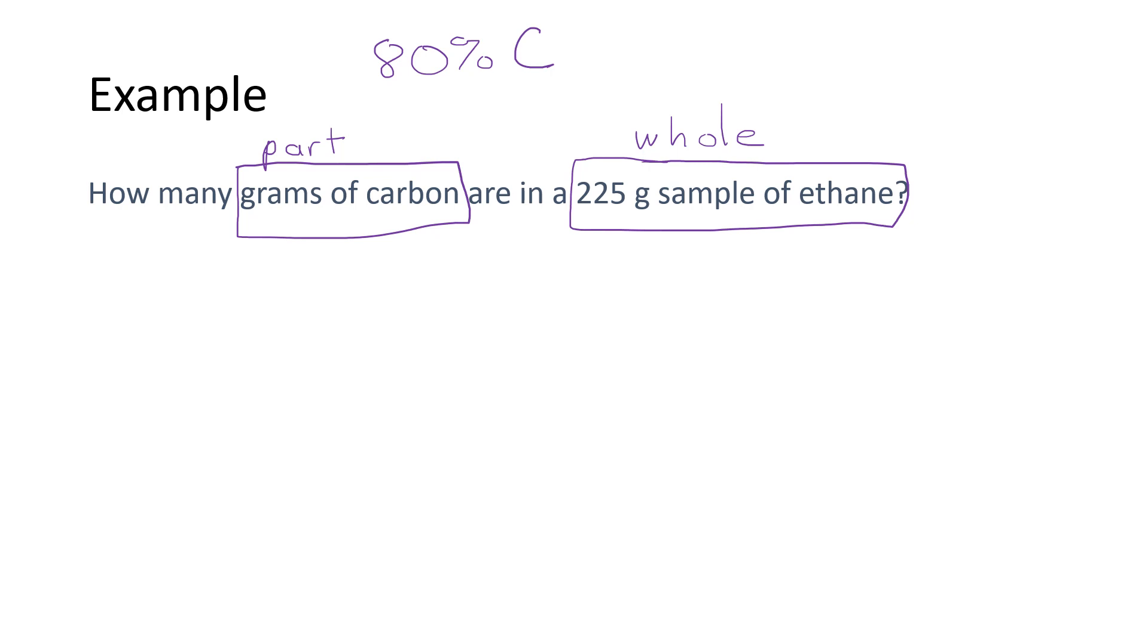The way I was taught to do a problem like this was you take the percentage of carbon, which is 80%, and you move the decimal two times to get the decimal equivalent, which would be 0.80.